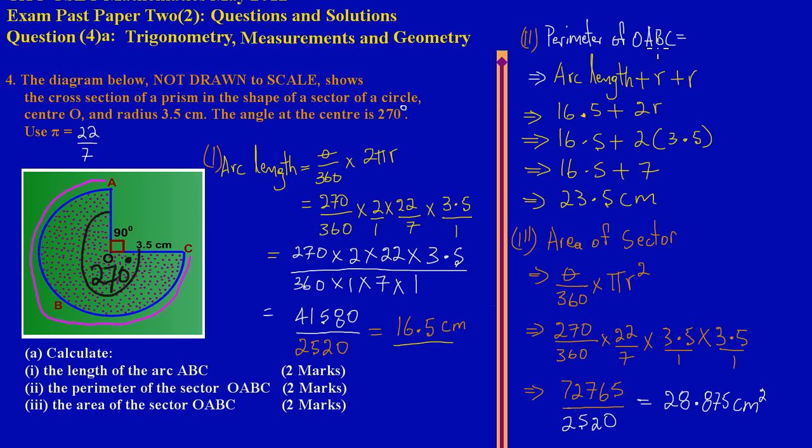In part 2, at my top right corner here, we calculated the perimeter of OABC and got 23.5 centimeters. We also calculated part 3, the area of the sector.